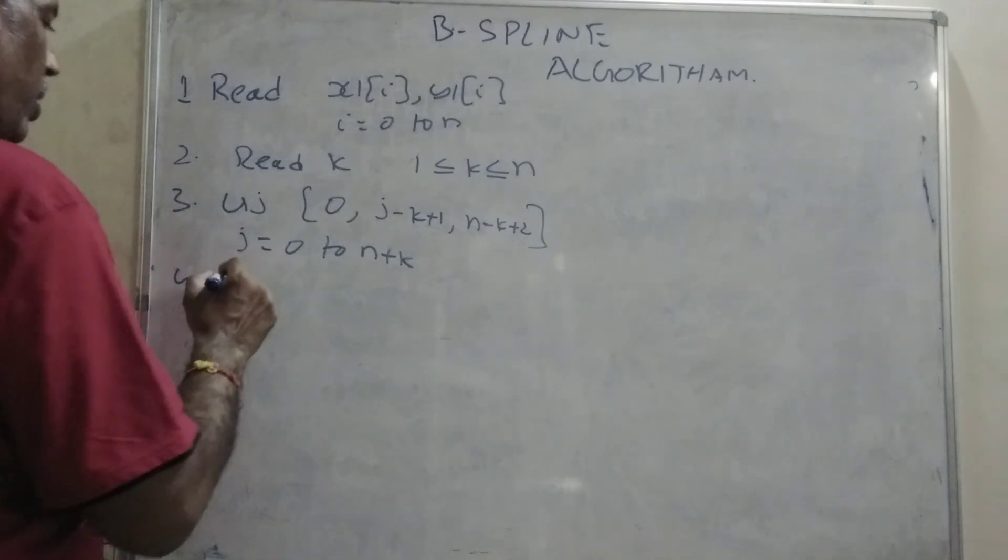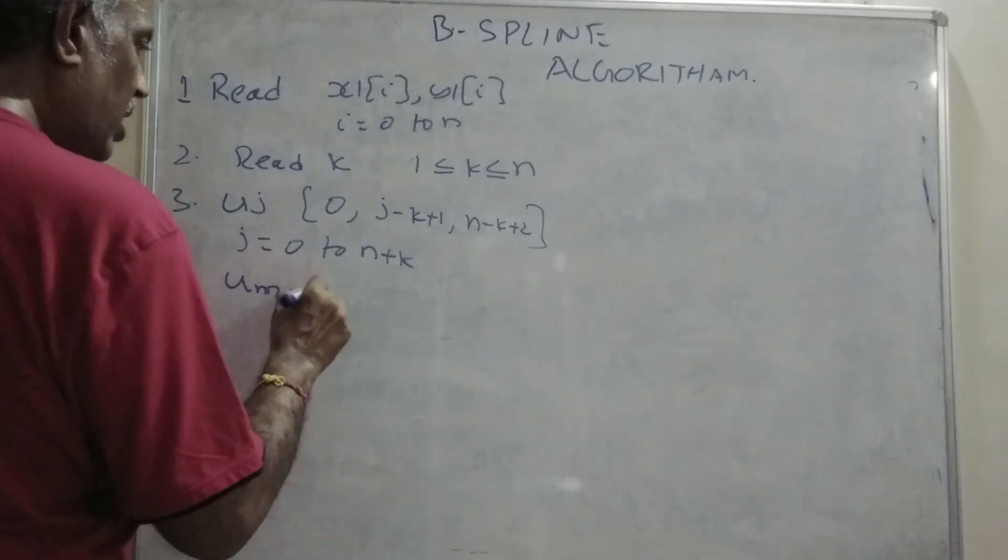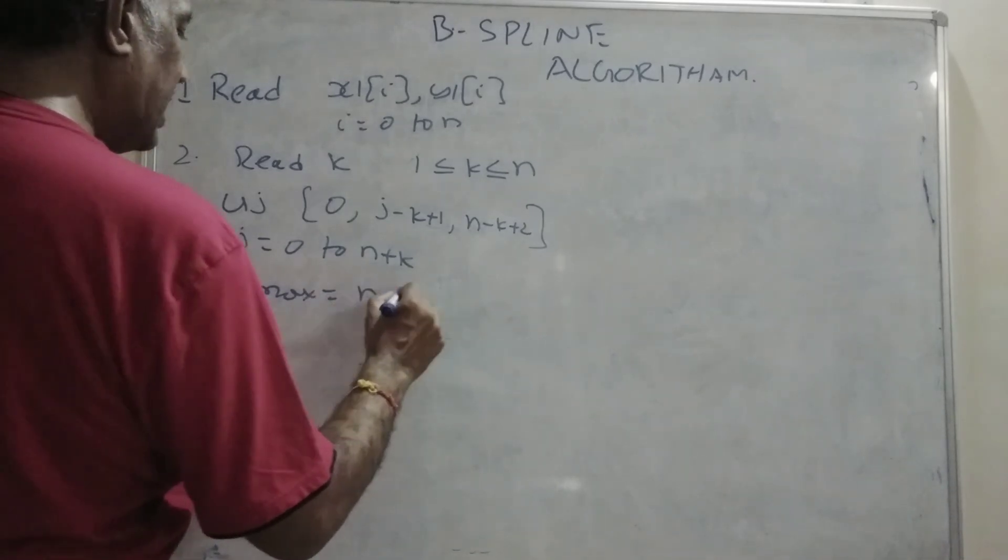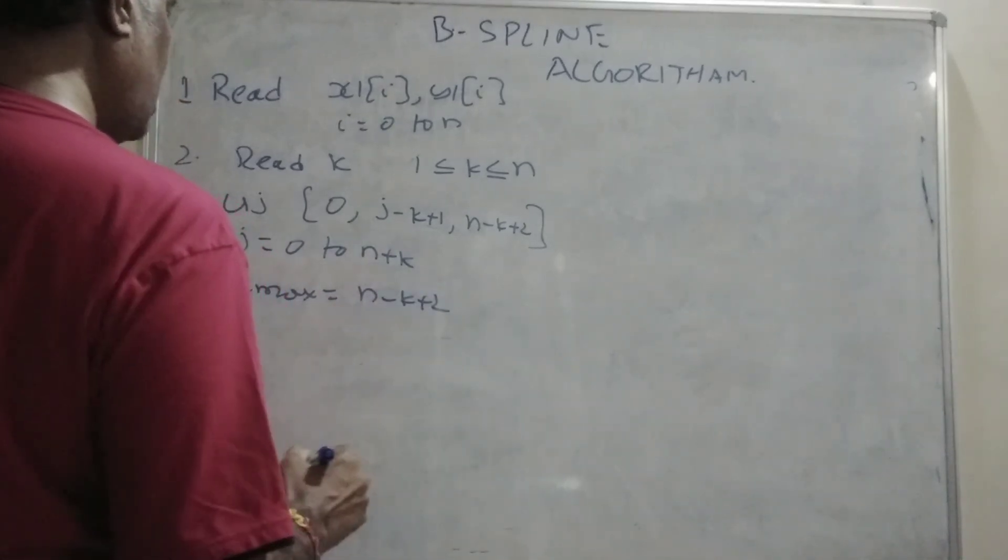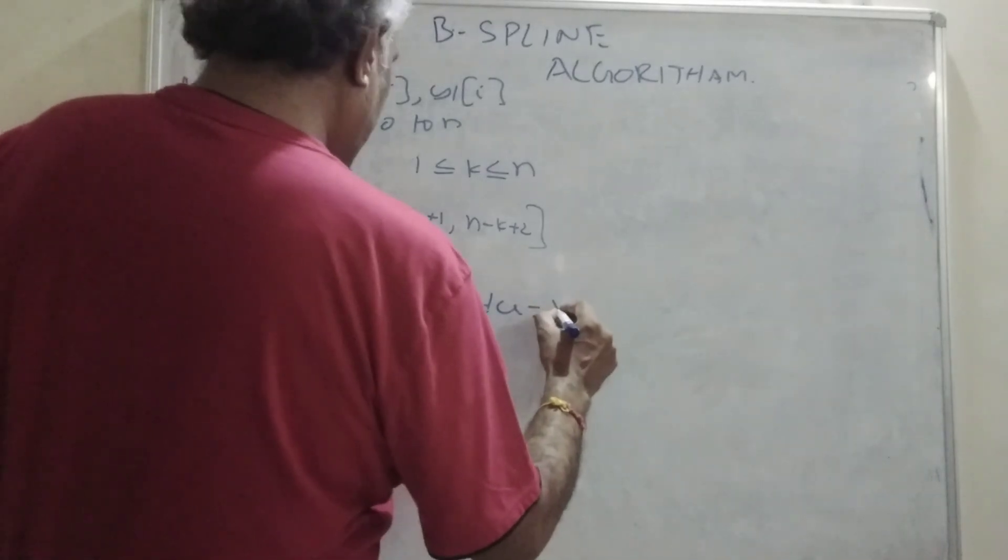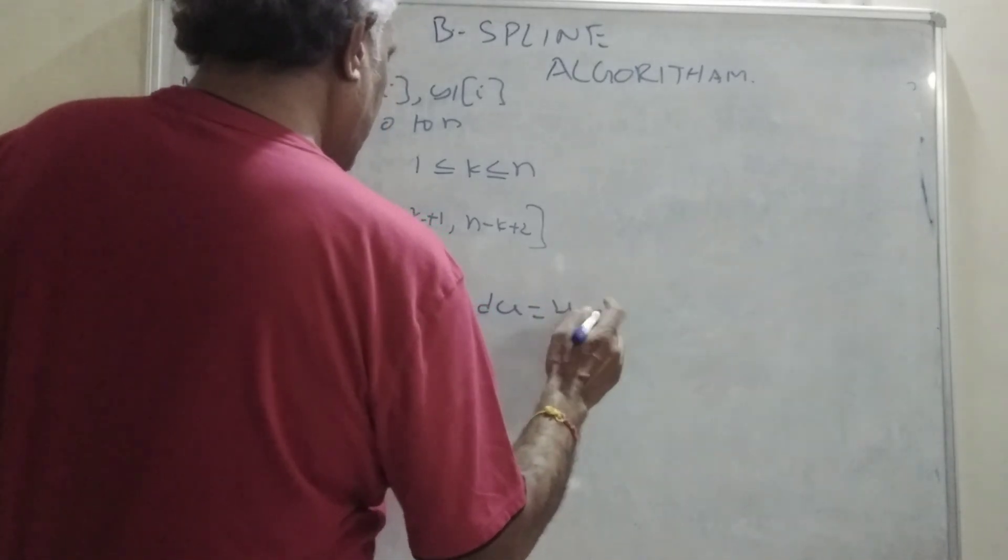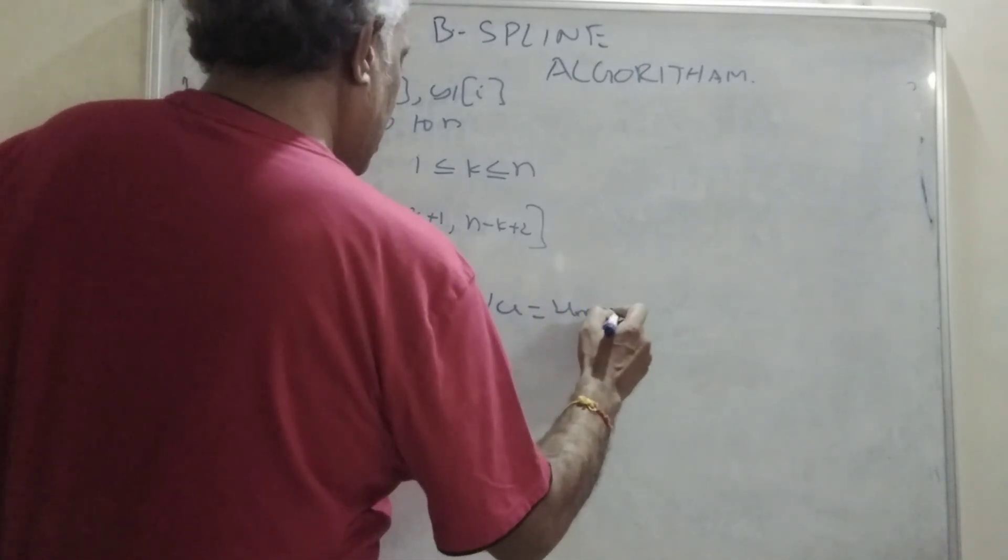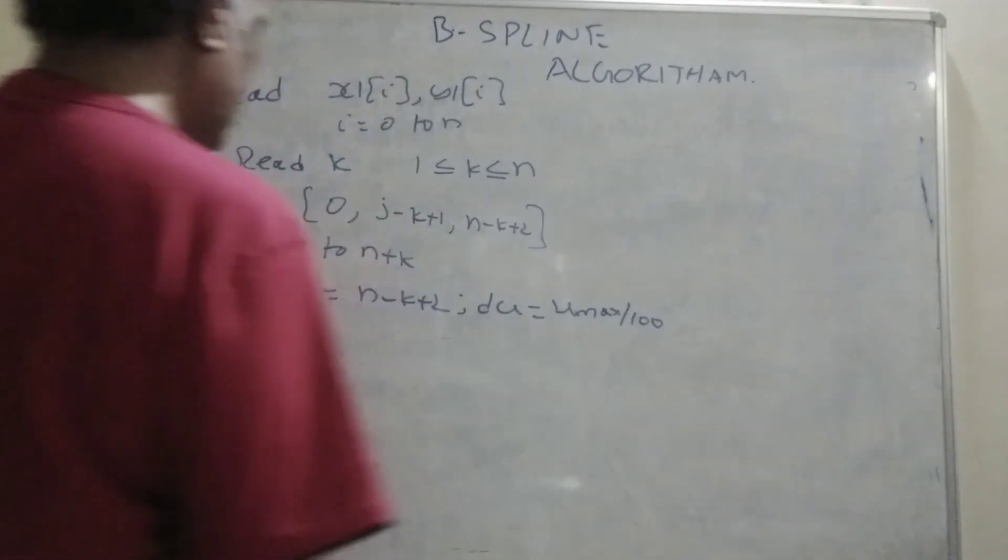And in the fourth, you are trying to find out u max. U max is equal to n minus k plus 2. And the differential u is equal to u max by 100.